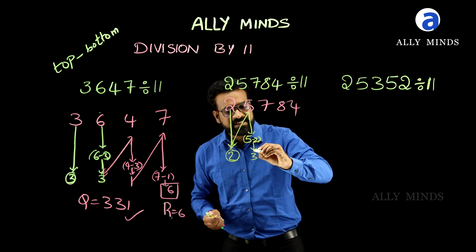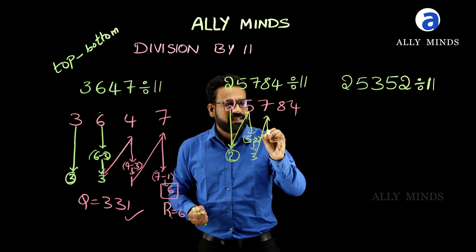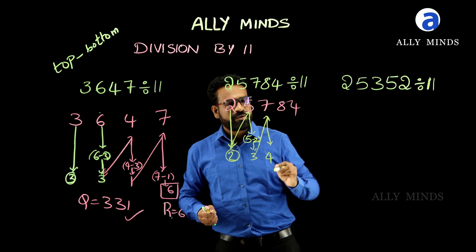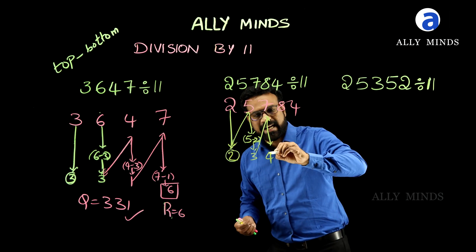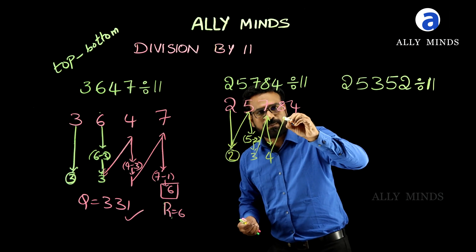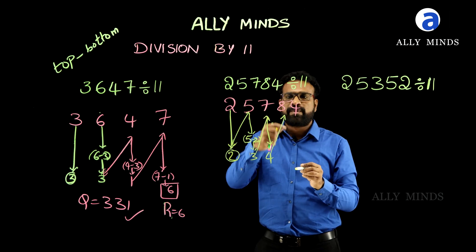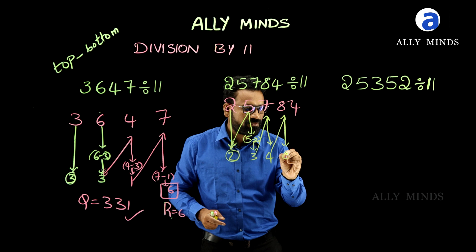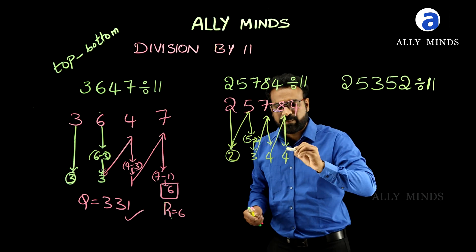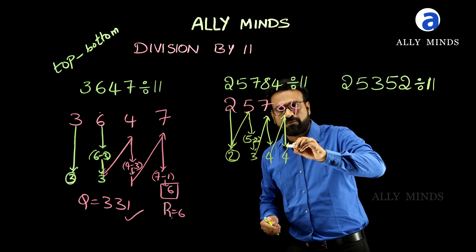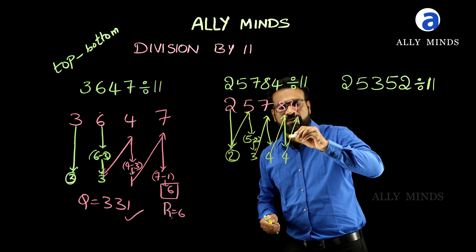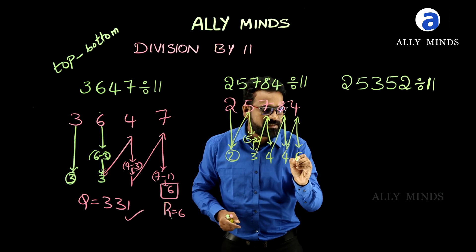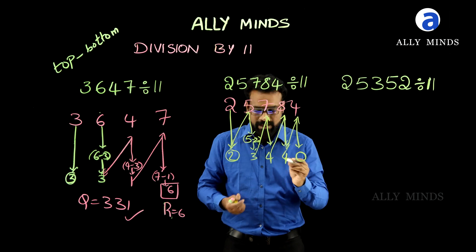Again, subtract this 3 from the top number 7. 7 minus 3 is 4. Again, subtract this bottom number 4 from the top number 8. 8 minus 4 is 4. Again, subtract this bottom number 4 from the top number 4. 4 minus 4 is 0.